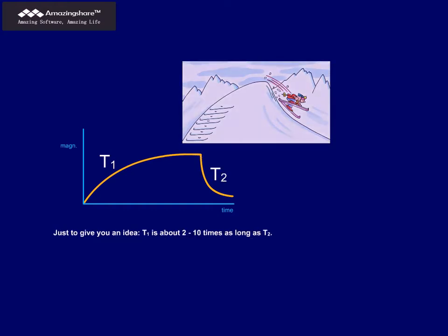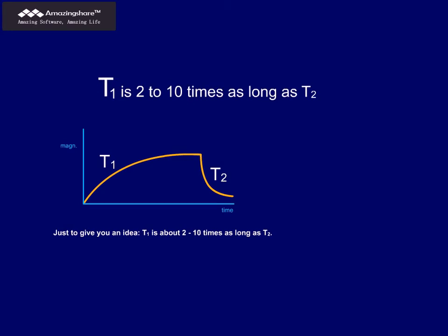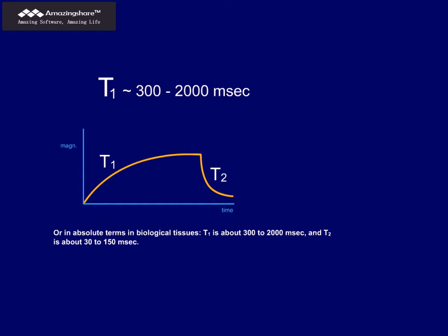Just to give you an idea, T1 is about 2 to 10 times as long as T2. Or, in absolute terms, in biological tissues, T1 is about 300 to 2,000 ms and T2 is about 30 to 150 ms.